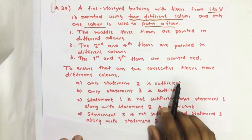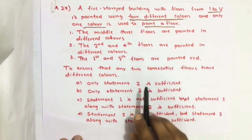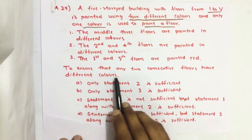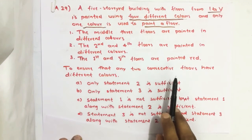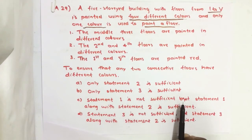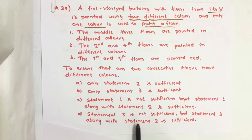We have four options. Option A: only statement two is sufficient. Option B: only statement three is sufficient. Option C: statement one is not sufficient, but statement one along with statement two is sufficient. Option D: statement three is not sufficient, but statement three along with statement two is sufficient.